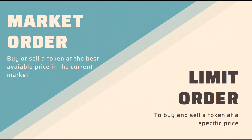There are two types of orders you'll normally see on an exchange: a market order and a limit order. With a market order, you buy or sell a token at the best price in the current market. This is normally the default setting on most platforms, it's the quickest way to swap a token, and transaction execution is immediate. Just be aware that you are responsible for paying the Ethereum gas price.